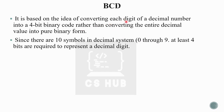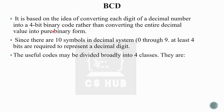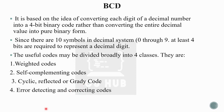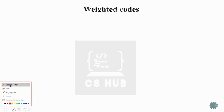That is why each decimal digit is converted into a four-bit binary code. The useful codes are generally divided into four classes: weighted codes, self-complementing codes, cyclic or reflected (Gray) codes, and error-detecting and correcting codes. Standard Binary Coded Decimal is commonly known as the weighted 8-4-2-1 BCD code.